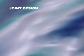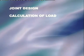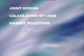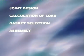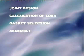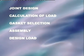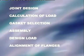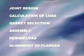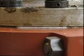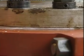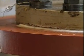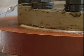These include: correct joint design and calculation of the load required to seal the joint; correct gasket selection; correct assembly of components in good condition; correct application of the design load to achieve the specified compression of the gasket; and correct alignment of the flanges. If these key directives are followed, your joint should pass the soapy bubble test and produce emission levels well below the suggested leak threshold of 500 parts per million.